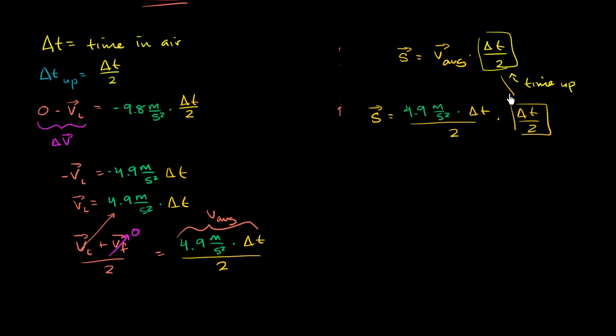This is the same thing. These are the same thing. And then we can simplify it. Our maximum displacement is equal to 4.9 meters per second squared times delta t squared, all of that over 4.